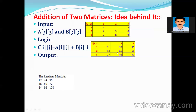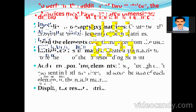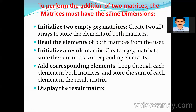The resultant matrix: 1+11=12, 2+22=24, 3+33=36. In order to perform addition or subtraction, the order of the matrices must be the same. The order is the number of rows by number of columns — a 3×3 matrix has three rows and three columns. Only when the orders are equal can we perform addition.